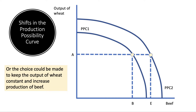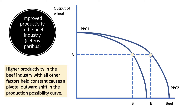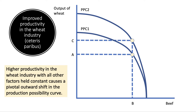I've drawn an outward shift there in terms of both potential outputs increasing. Let's isolate an improvement in productivity in the beef sector, but nothing else has changed. Higher productivity in that industry will cause a pivotal outward shift in the production possibility curve, allowing us to produce more physical output of beef with given resources. We could isolate the impact of an increase in efficiency in the wheat industry to show something similar on the y-axis — that we can increase output of wheat with no loss of beef production.